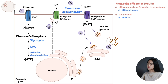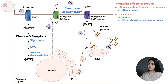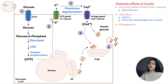This activates phosphofructokinase 1 (PFK1) and pyruvate dehydrogenase complex activity, because pyruvate is being converted to acetyl-CoA in the liver and muscle. This also stimulates glycogen synthesis, or glycogenesis, so glycogen synthase will be activated.